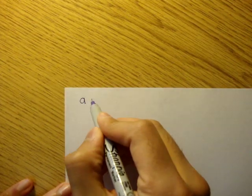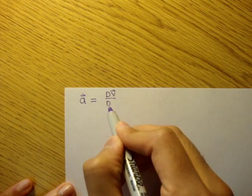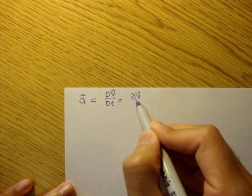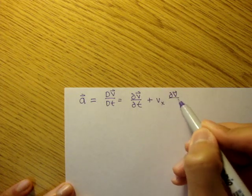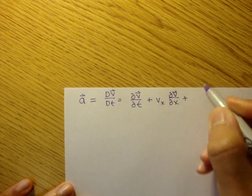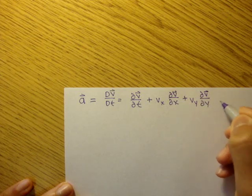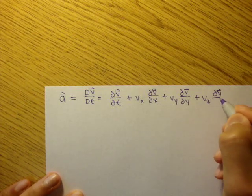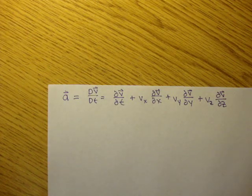We know our old acceleration formula: a equals dv/dt, and that equals the partial of the velocity function with respect to time, plus vx times the partial of v with respect to x, plus vy times the partial of v with respect to y, plus vz times the partial of v with respect to z. That's our old acceleration formula.